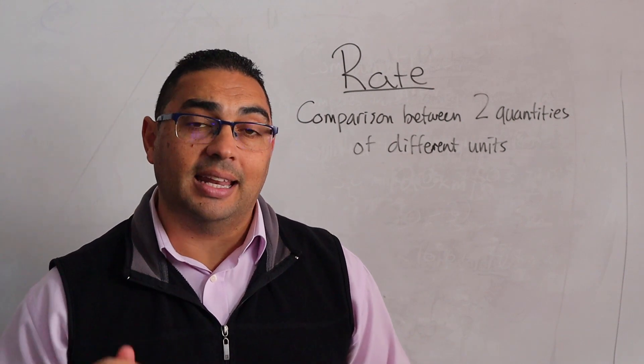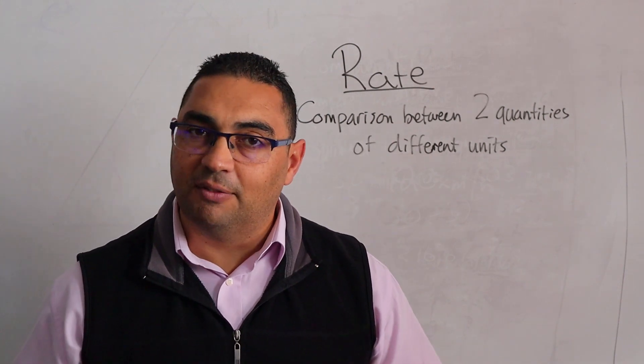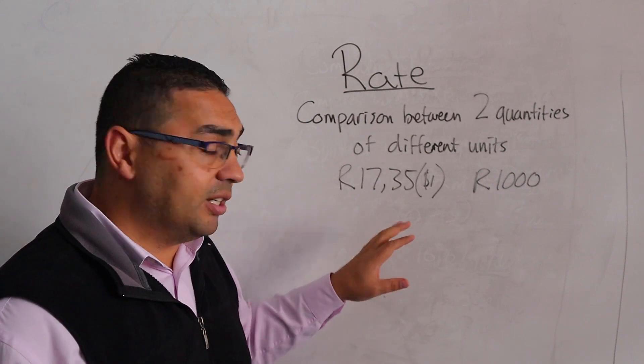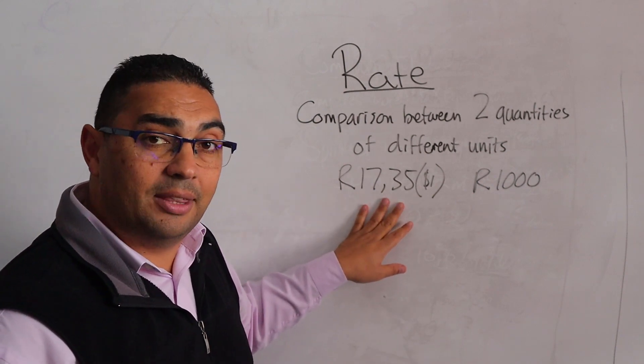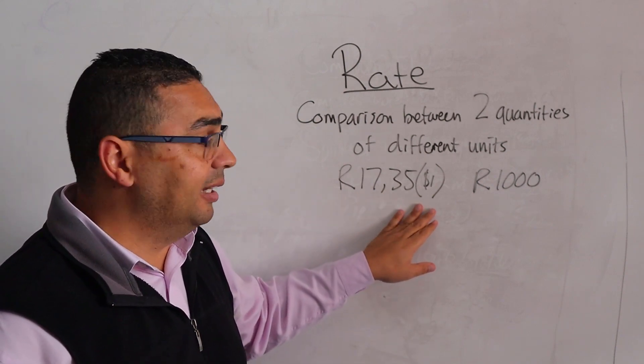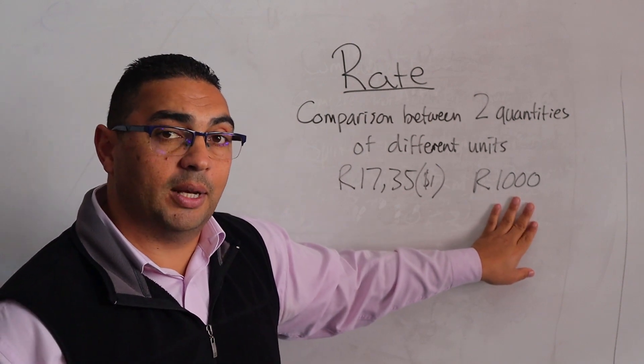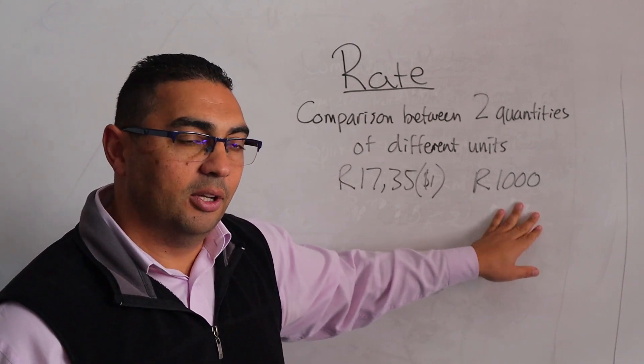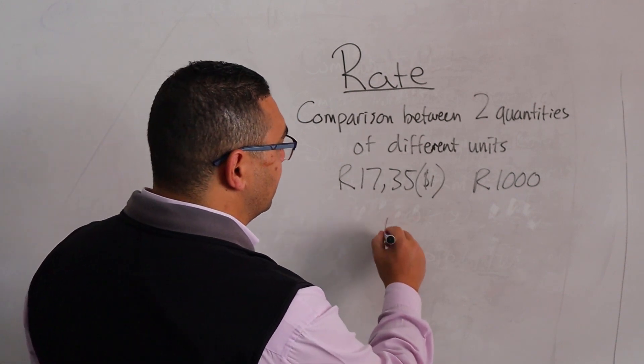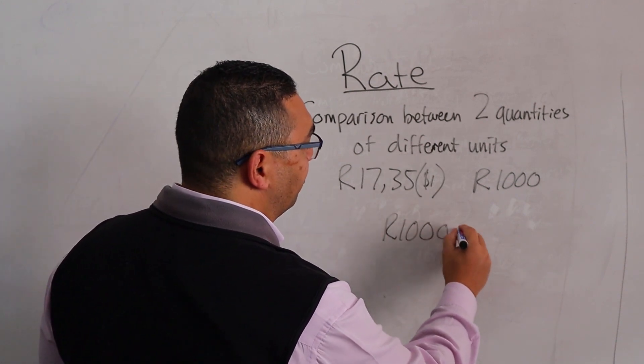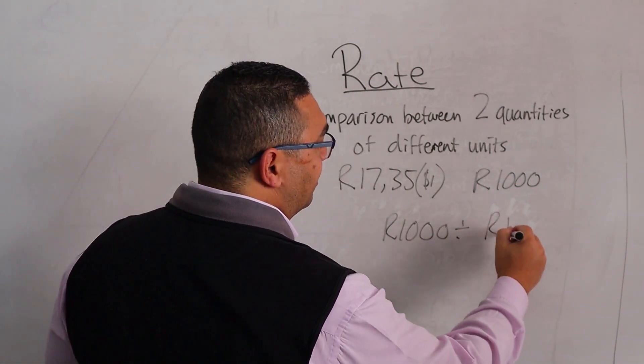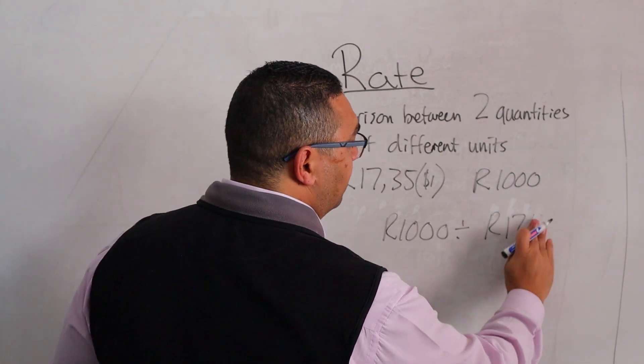Let's have a look. My exchange rate is 17 rand 35 to the U.S. dollar, and I've got a thousand rand that I want to take with me. So how many dollars am I going to have? I'm going to take my thousand and divide that by 17.35.